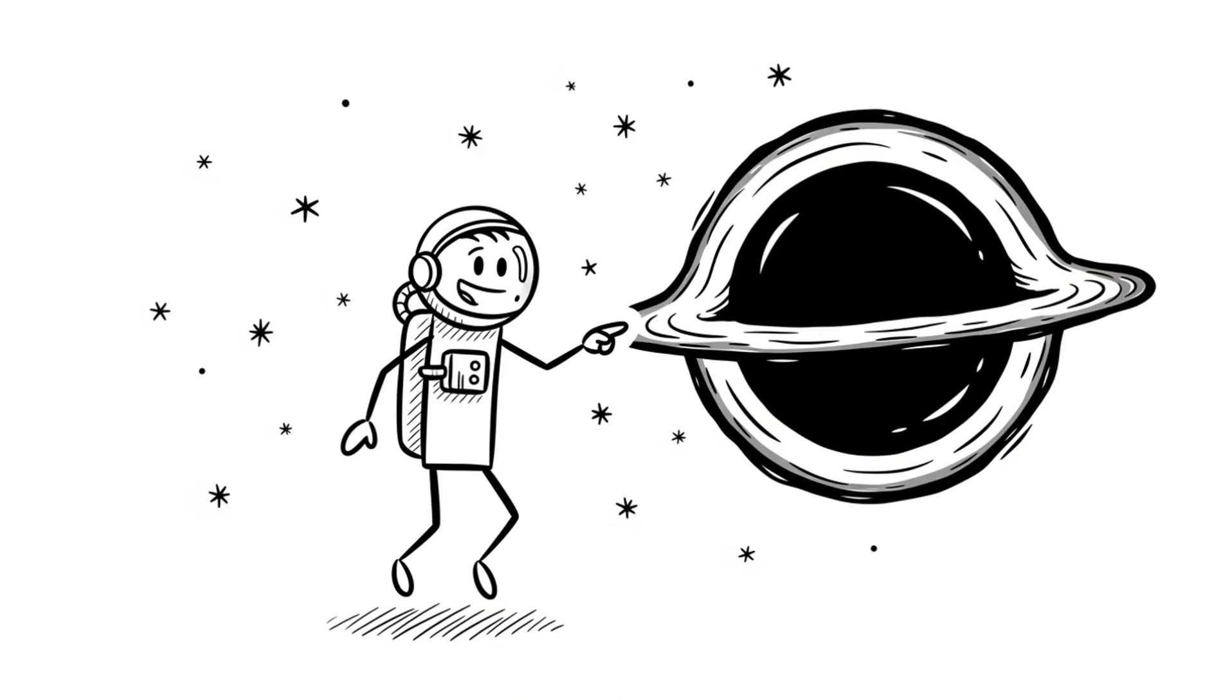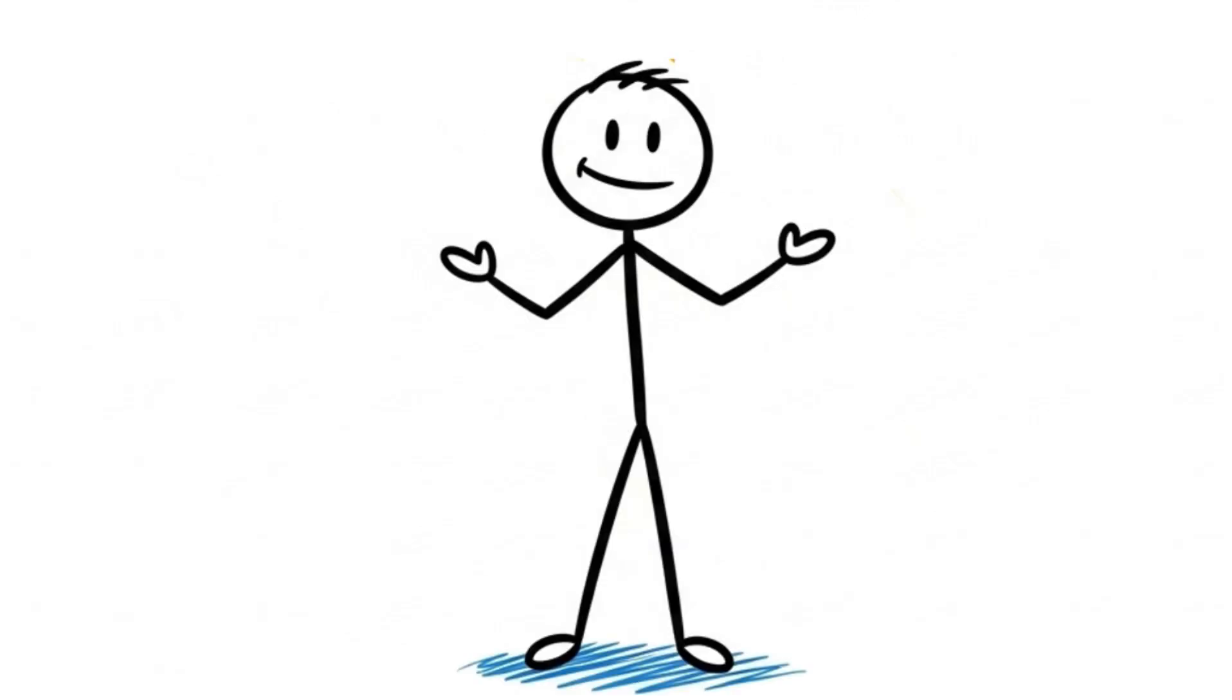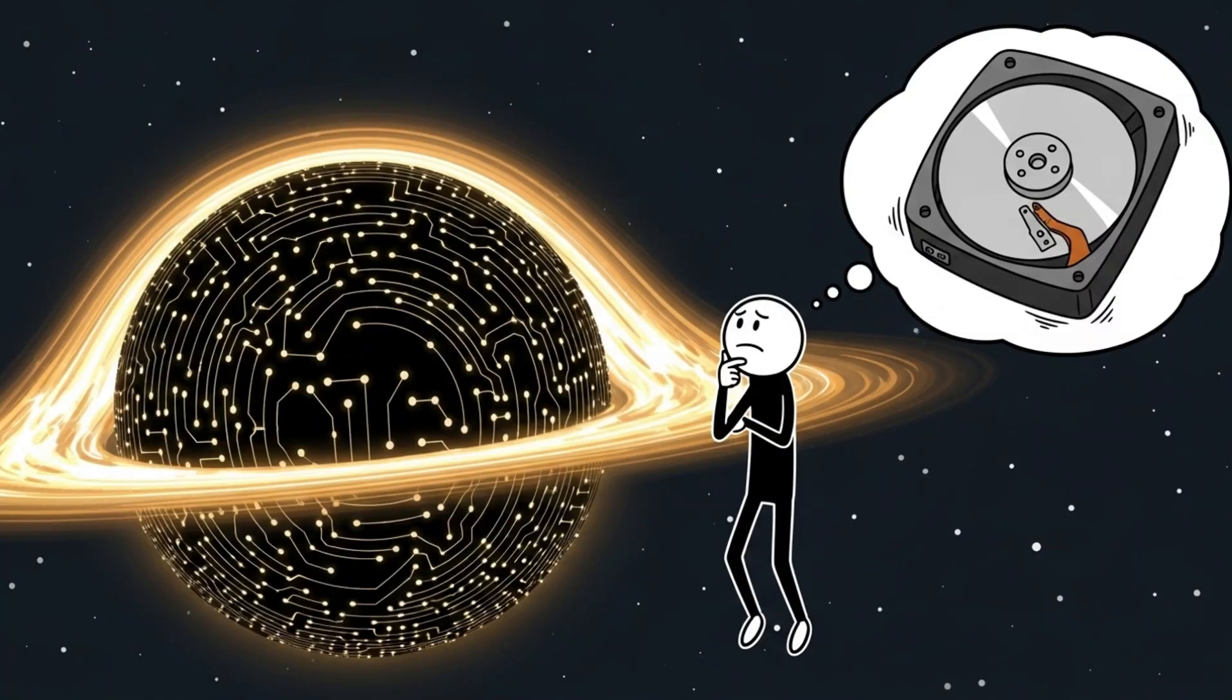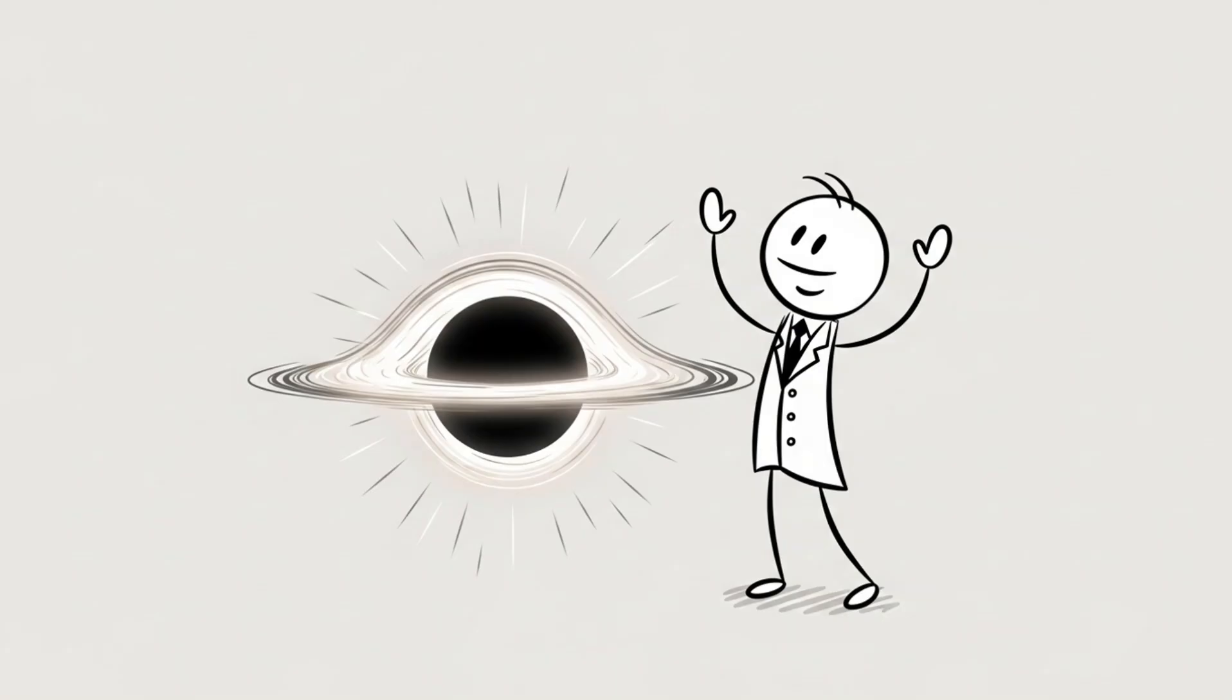This paradox isn't just about black holes. It's about whether the universe itself makes sense. If information can be destroyed, then predictability collapses, and reality becomes chaos. The black hole data heist is one of the biggest puzzles in science, and solving it could unlock the secrets of both gravity and quantum mechanics. Until then, black holes remain the ultimate cosmic thieves.